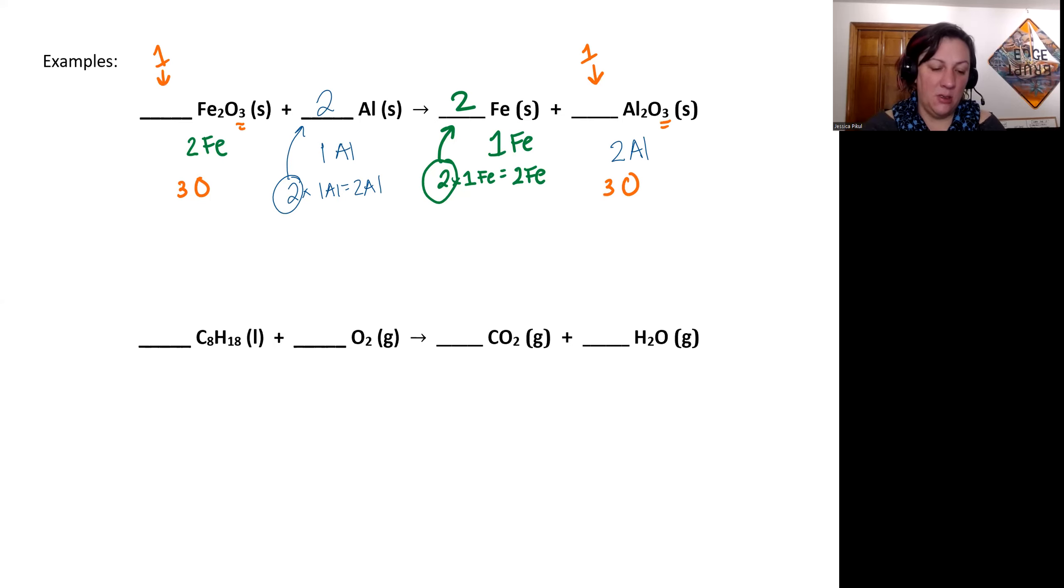And so that's it. That's my balanced chemical equation. If I wanted to rewrite it, I would write it as Fe2O3 solid plus my 2 Al solid forms 2 Fe plus my one Al2O3. There we go.